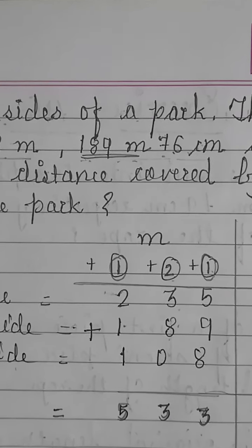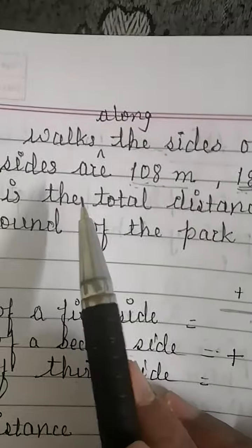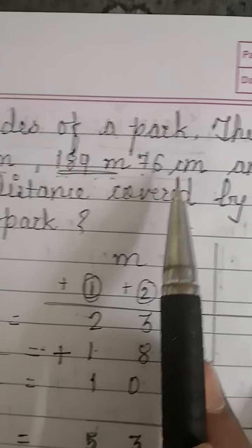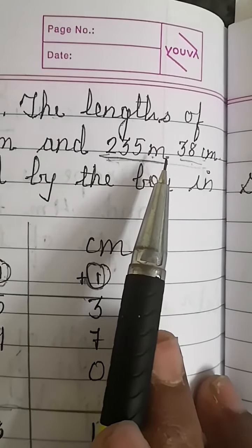Hence the original length of the rope was 10 meter 15 centimeter. Next problem: A boy walks along the sides of a park. The lengths of three sides are 235 meter 38 centimeter, 189 meter 76 centimeter, and 108 meter. What is the total distance covered by the boy in one round of the park?